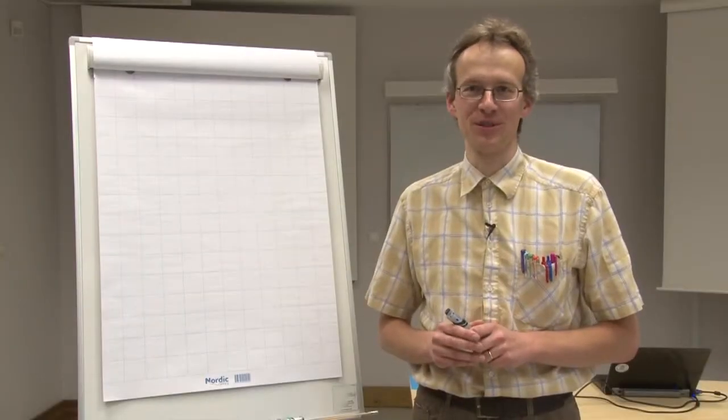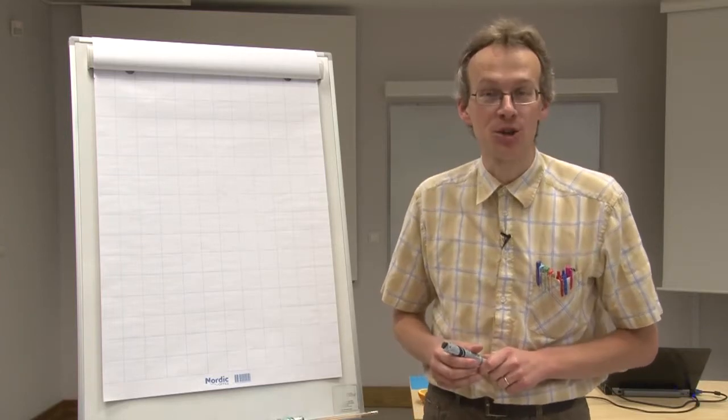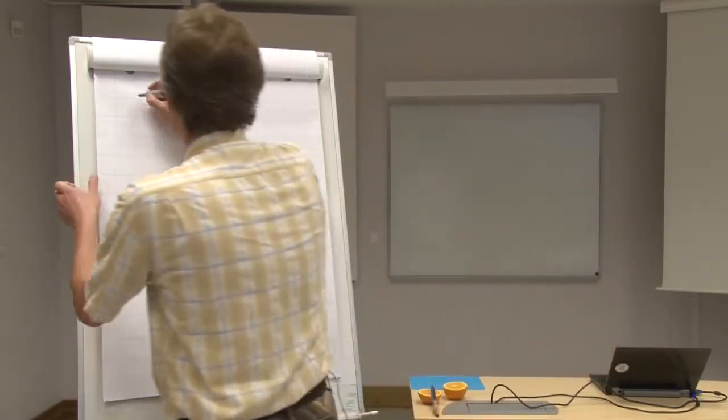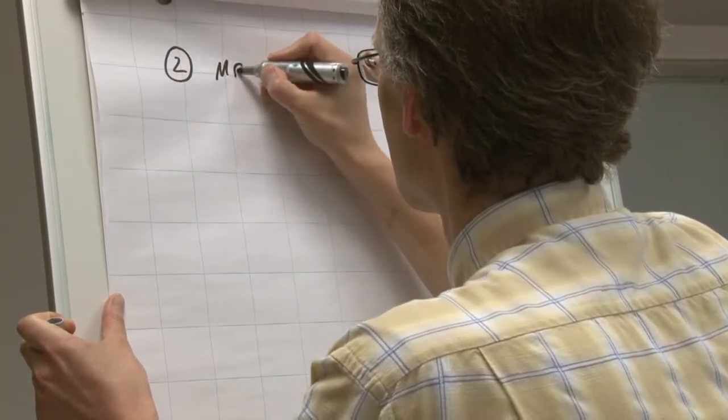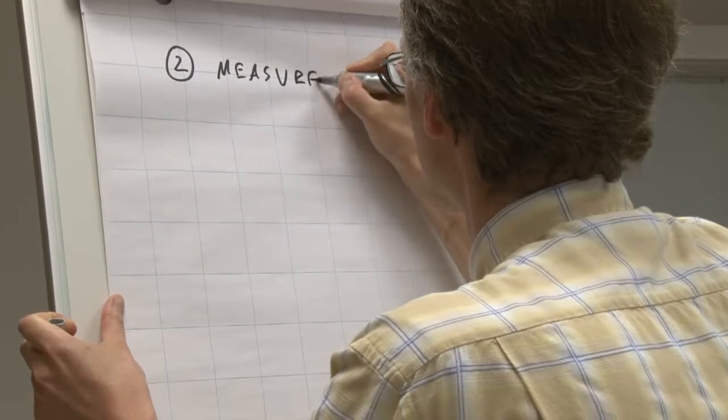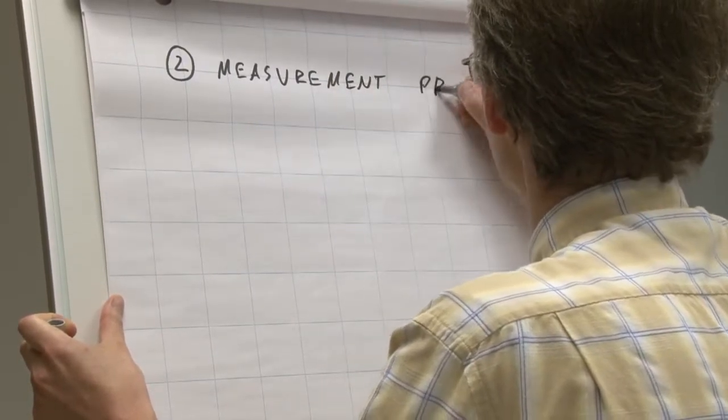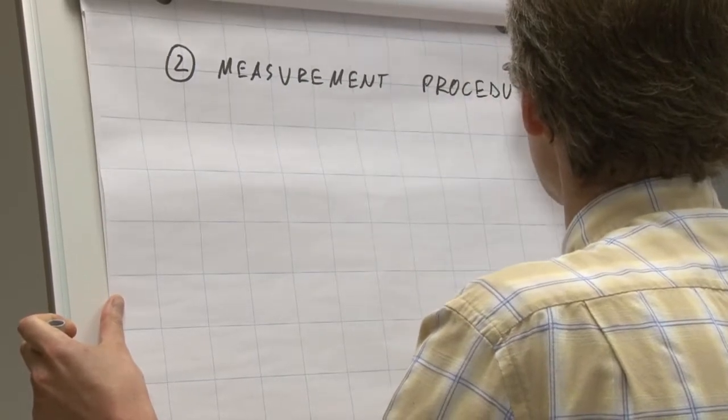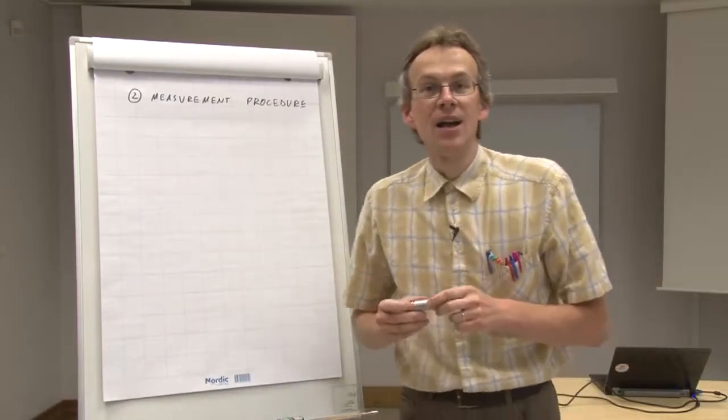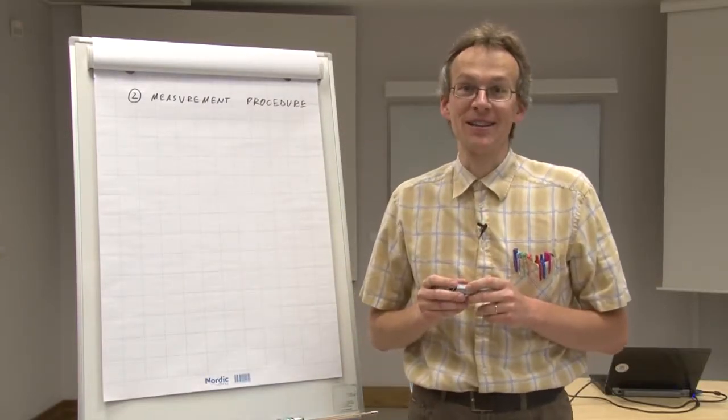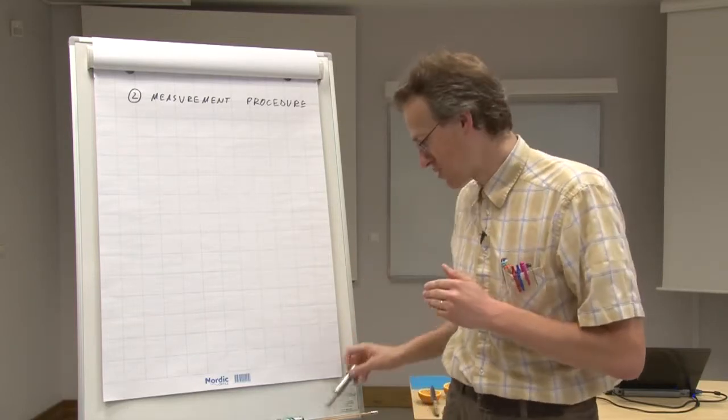The second principle of measurement uncertainty estimation is about measurement procedure or analysis procedure. The essence of this principle is that the measurement procedure must correspond to the measurement definition.